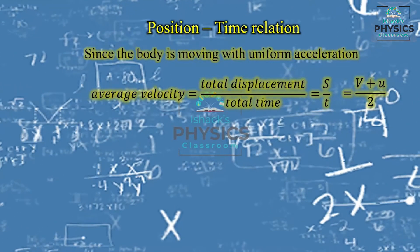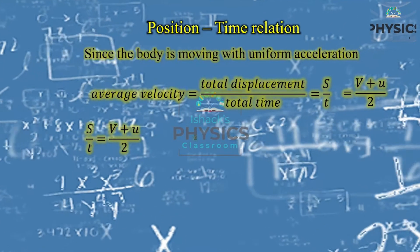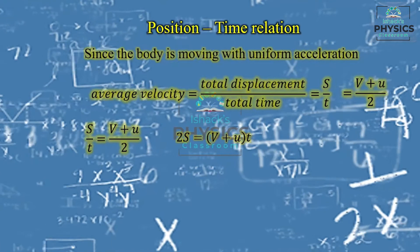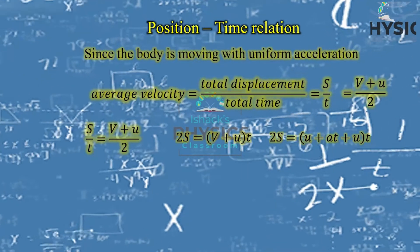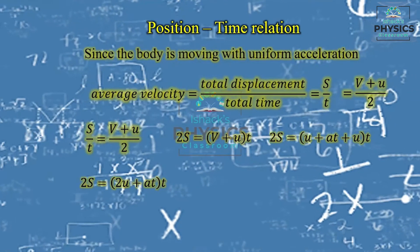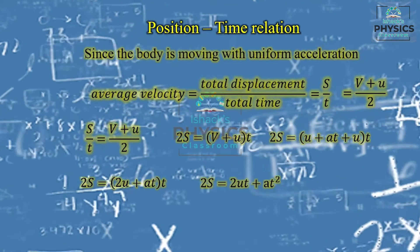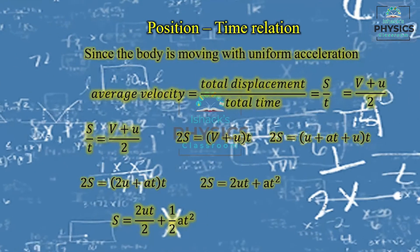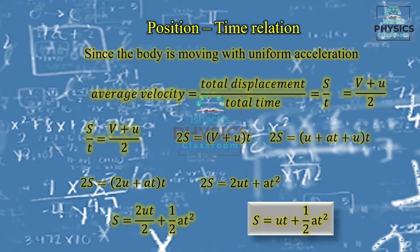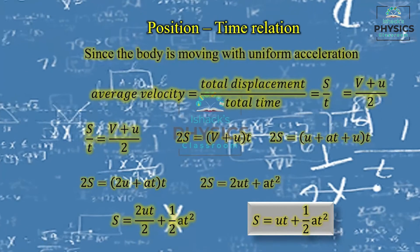Now substituting v = u + at into 2s = (v + u)t: 2s = (u + at + u) × t = (2u + at) × t. Opening brackets: 2s = 2ut + at². Dividing by 2: s = ut + ½at². This is the position-time relation, also called the displacement-time relation: s = ut + ½at².